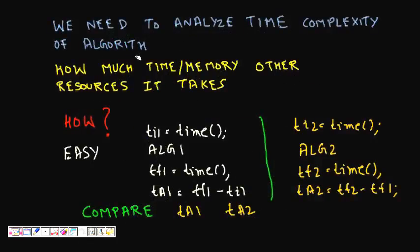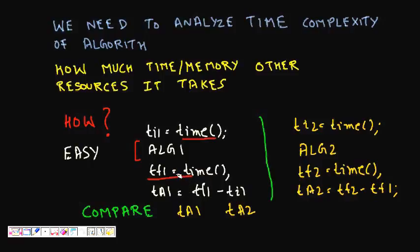We need to find answers for how much time the algorithm will take, how much memory it might take, and how much of other resources it might require. One simple solution that comes to mind is: we write the program, execute the code, record the initial time ti1, run the algorithm, then record the finish time tf1. The total time taken is tf1 minus ti1.